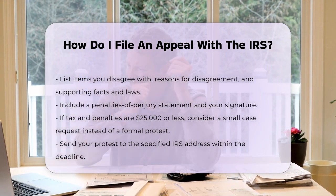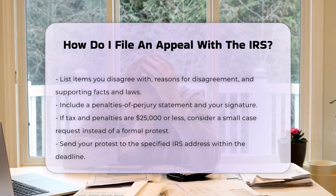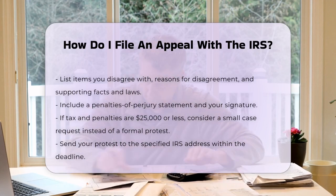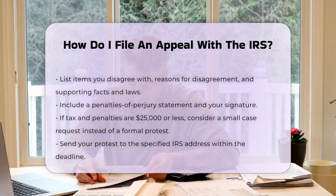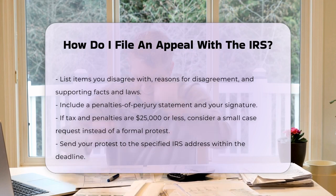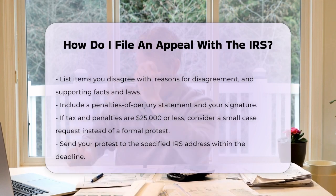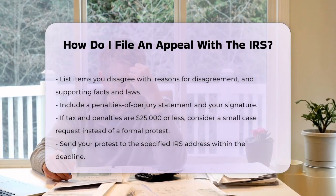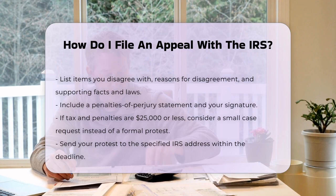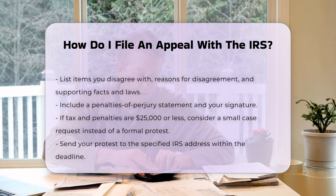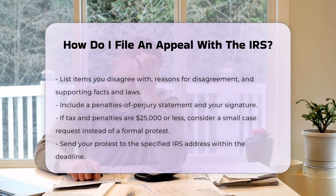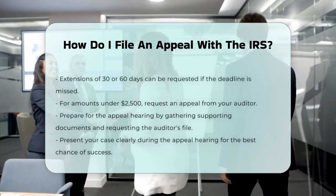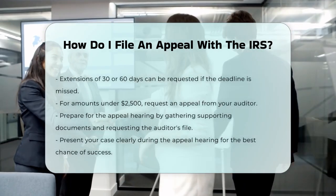For amounts under $2,500, you can ask your auditor for an appeal. For amounts between $2,500 and $25,000, write a letter of protest titled a small case request. For amounts over $25,000, you'll need to complete IRS Form 12203.